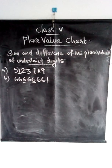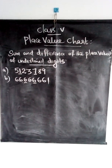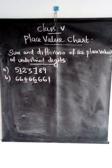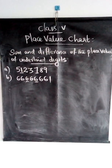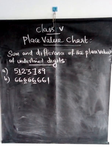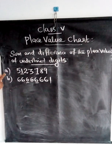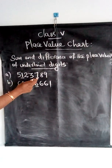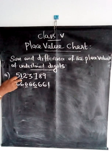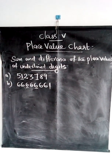Next, we are going to study about how to find the sum and the difference of the place values of underlined digits. Here, two questions are given. In the first question, the underlined digits are 7 and 1. First, we can find the sum of the place values of these underlined digits.